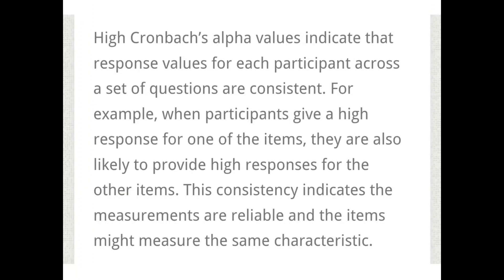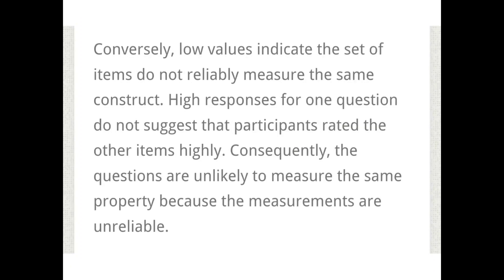High Cronbach's Alpha levels indicate a high level of consistency, whereas low alpha levels indicate that the tool is unreliable. If the tool is unreliable, you can modify, restructure, or reconstruct it to make it as reliable as possible. Higher alpha indicates a highly reliable tool, while a low Cronbach's Alpha level indicates the tool is not reliable.